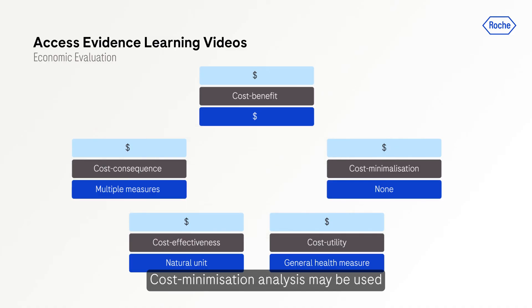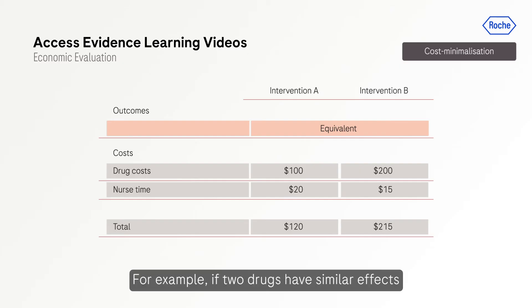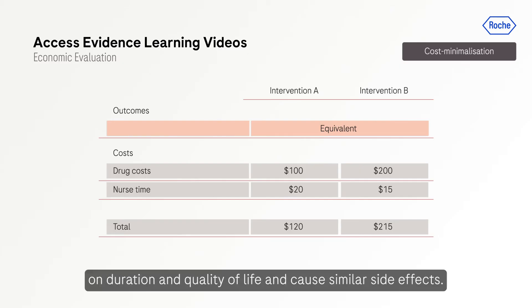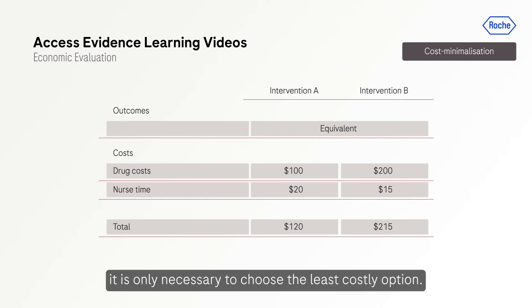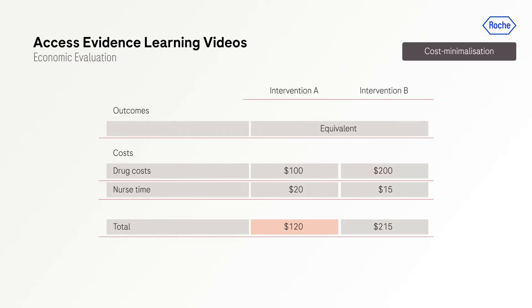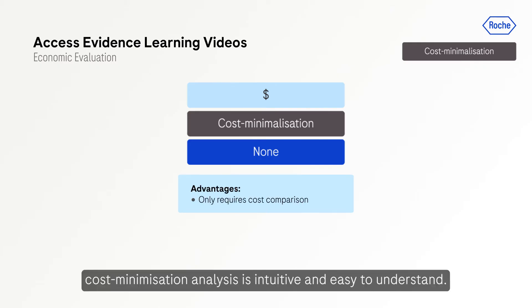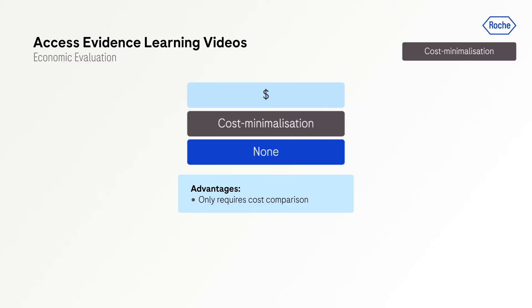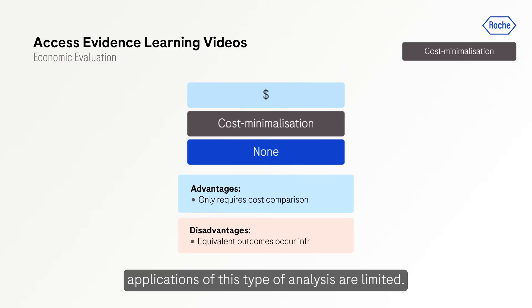Cost-minimization analysis may be used when the interventions being compared have equivalent health outcomes — for example, if two drugs have similar effects on duration and quality of life and cause similar side effects. The results are simply the total costs of each intervention, and it is only necessary to choose the least costly option. Because it involves only cost comparison, cost-minimization analysis is intuitive and easy to understand. However, since equivalent outcomes occur fairly infrequently, applications of this type of analysis are limited.